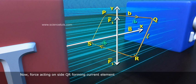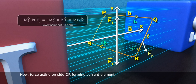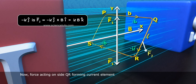Now, force acting on side QR forming current element minus ILJ cap is F2 bar equals to minus ILJ cap cross B I cap equals to ILB K cap.